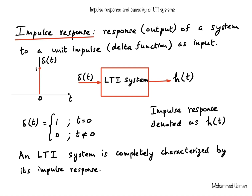To begin with, the impulse response, as the name suggests, is the response of the system when the input is an impulse function. So the output of a system to a unit impulse function as input is called the impulse response of the system. The unit impulse function, also called the delta function, is defined as having a value of 1 at time t equal to 0, and for all other values of time it is equal to 0. So the impulse is defined only at t equal to 0, at which time it has a value of 1.